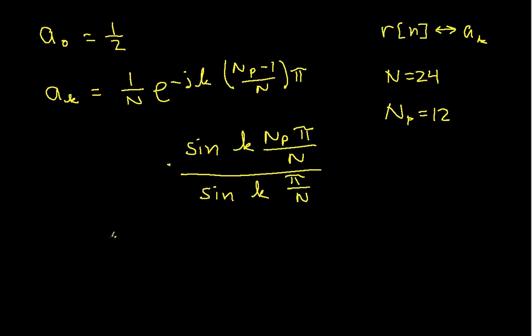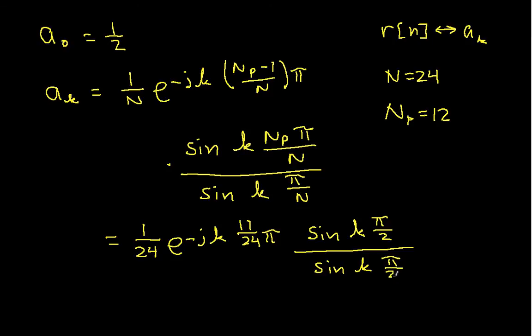So when I work this whole thing out, I get that these coefficients, by working it out, I mean plugging in the numbers here. I have 1 over 24 e to the minus Jk 11 over 24 pi sine k pi over 2 divided by sine k pi over 24.